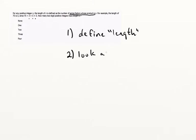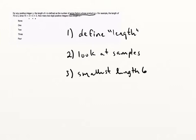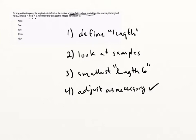Let's back up and think about how we broke this down. The first step is just to define 'length.' Then we look at sample numbers, get an idea of the smallest length-6 number, and adjust as necessary. The trick to a question like this is to break it down intelligently and not get freaked out by the abstraction. There's barely any calculation aside from prime factorization, which the GMAT expects you to know. If you know how to do a prime factorization, this question is within reach.